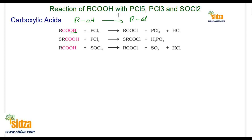With alcohols, there is simply a replacement of hydroxide by chlorine from PCl₅ or PCl₃. In carboxylic acids the mechanism is different. One molecule of PCl₃ reacts with three molecules of carboxylic acid — all three chlorine atoms can be replaced by OH. One molecule of PCl₅ reacts with only one molecule of carboxylic acid. That is the only difference between the pentachloride and the trichloride.